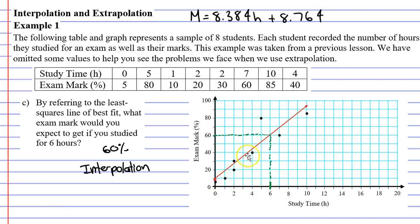We can see our points here range between study times of 0 to 10. So anything between 0 and 10 is an example of interpolation.